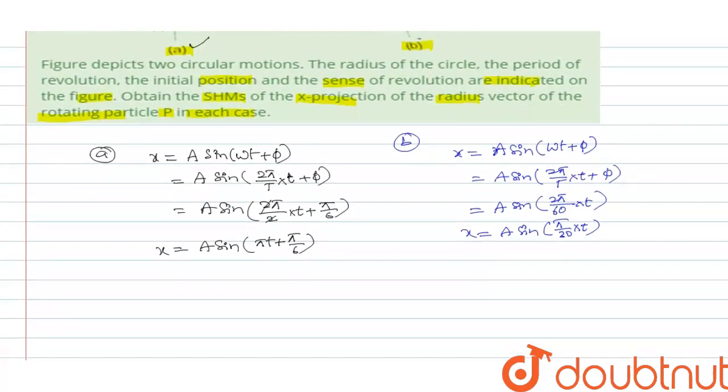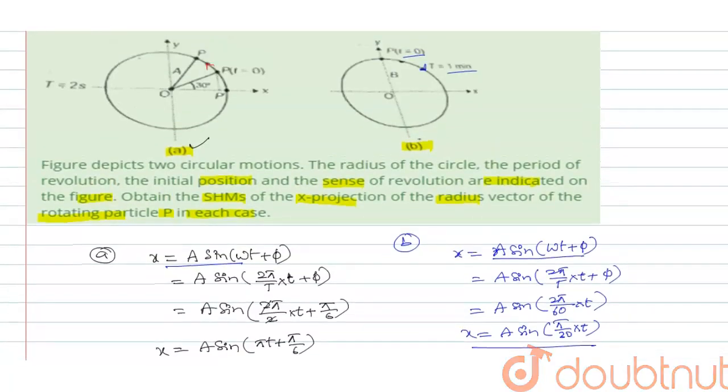So like this, we can write the expression by SHM of the x projection of the radius of the rotating particle P in each case. Okay. So generalized equation, if you compare this, this looks like an SHM equation. I hope you understood the simple equation. Thank you very much.